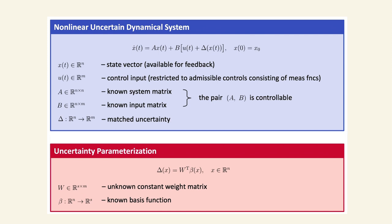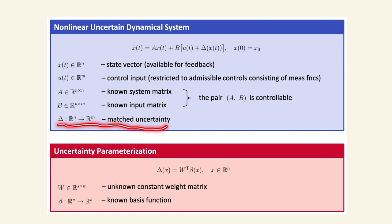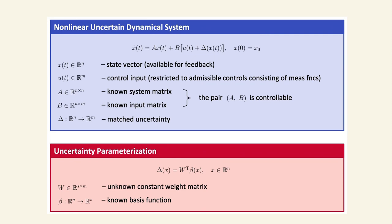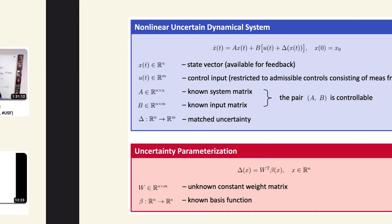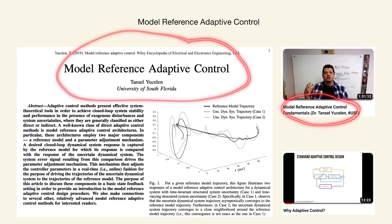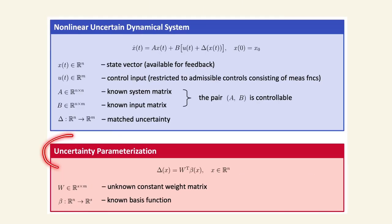Adaptive control deals with uncertain dynamical systems. Consider the nonlinear uncertain dynamical system where x is the state vector, u is the control input, A is the known system matrix, B is the known input matrix, and delta is a matched uncertainty — matched because it can be written in terms of B. I parameterize the uncertainty as B times beta (a known basis function) times W, an unknown constant weight matrix.